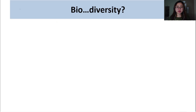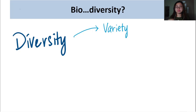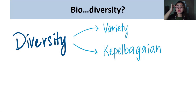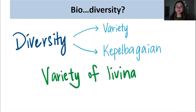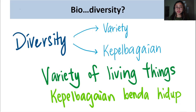Now, before we go into the whole system stuff, let's first talk — what's biodiversity? We'll start with the word diversity. So diversity could also mean variety — berapa pelbagai jenis sesuatu — how many types of things, how many varieties of things. In BM, we can say diversity is also kepelbagaian. So a lot of the stuff in this chapter is actually talking about the variety of living things — kepelbagaian benda hidup yang kita boleh tengok, yang kita boleh kaji.